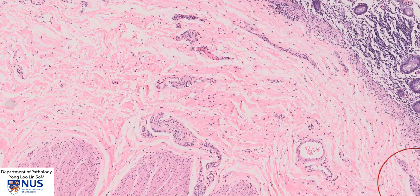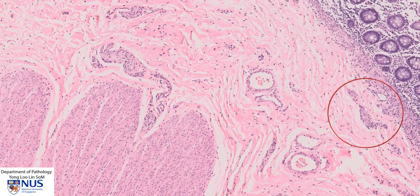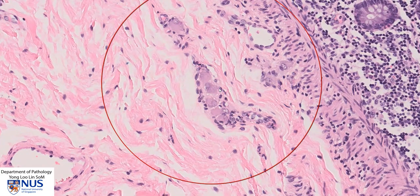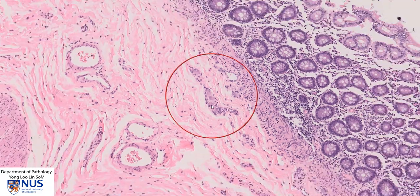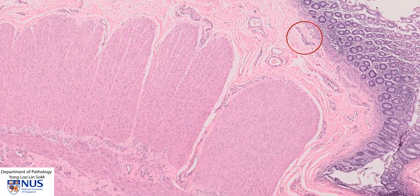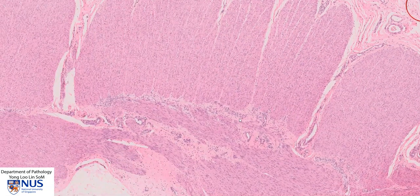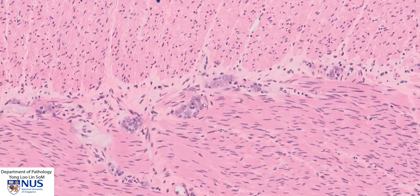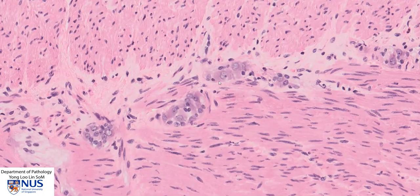Here again we have another small nerve twig, another one here, and over here again we can see the presence of some of these very distinctive ganglion cells. Moving downwards into the myenteric plexus, we would expect to see it here between the two layers of smooth muscle. And over here again, we can see very clearly the presence of ganglion cells — there is another one here, as well as here and here.